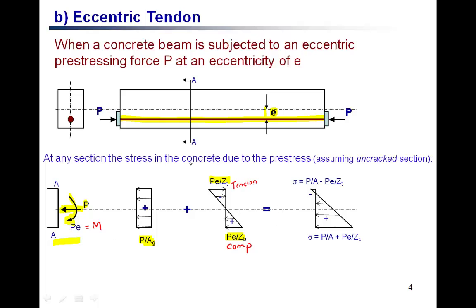The overall effect of eccentric prestressing is that at the bottom we have a large compressive stress due to the axial stress plus the positive bending stress. At the top we may have only a small tensile or small compressive stress. This stress condition from the eccentric arrangement is more efficient than placing the prestressing wire at the center, because we now have a large compressive stress at the bottom, which is where the tensile stress will come from the external loading.